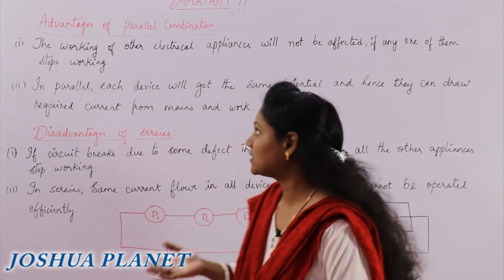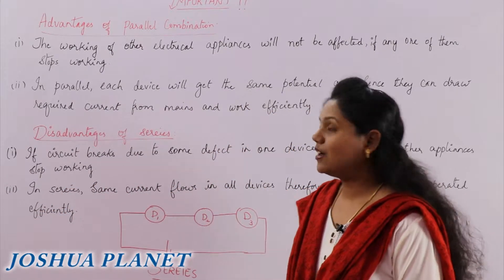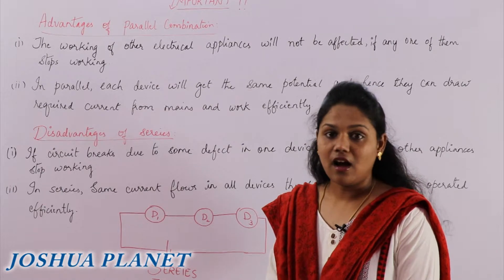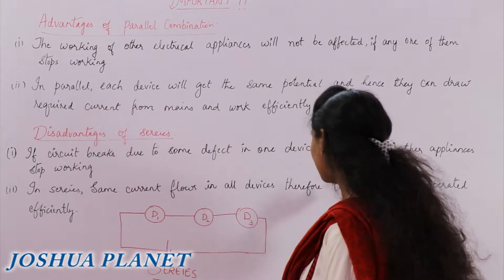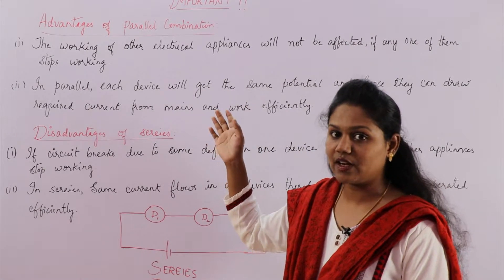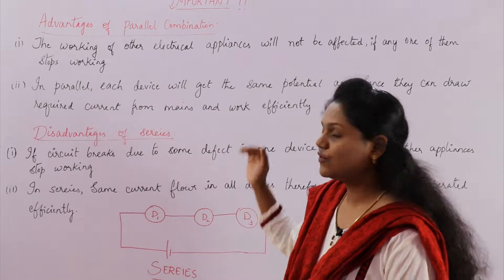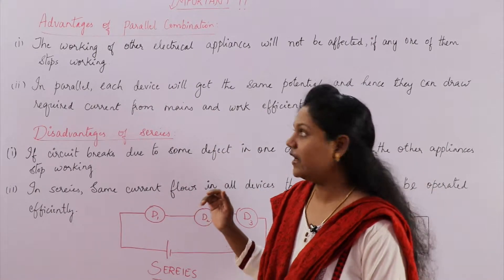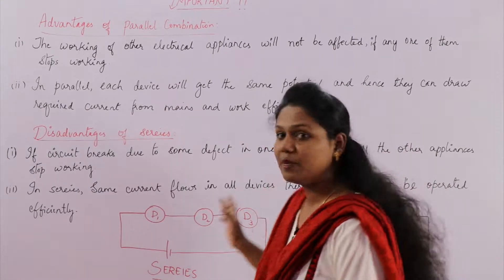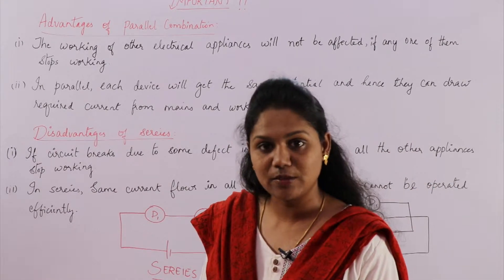Again, the question also is asked the same. What are the advantages of parallel combination? So when you ask like that, how will you explain? How is the parallel combination advantageous for us? You will answer it like this. So you can represent your answer in two different points. The first point reads: the working of other electrical appliances will not be affected if any one of them stops working.